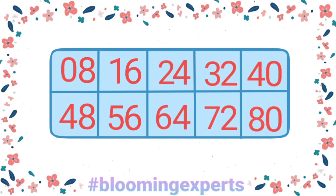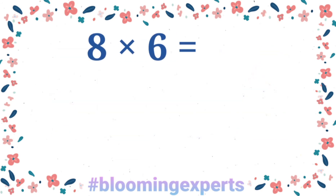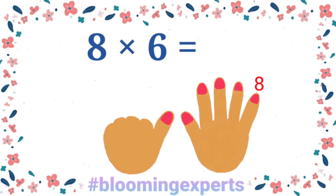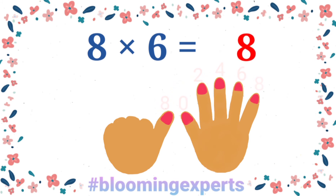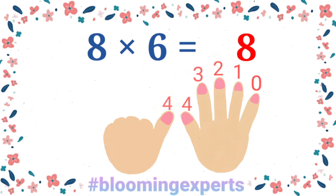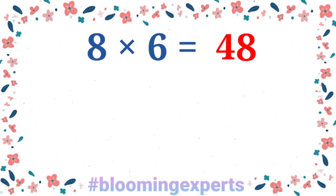Here is the 8 times table. Now let's apply this trick with 8 times 6. Let's count the ones digits: 8, 6, 4, 2, 0 — then again — 8. So the ones digit is 8. For the tens digit, count: 0, 1, 2, 3, 4 — then again — 4. So 4 is the tens digit, giving us the product.